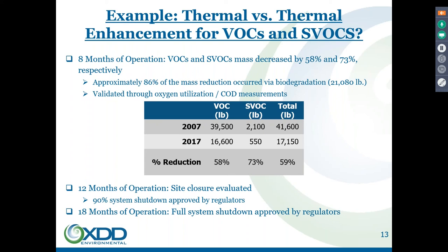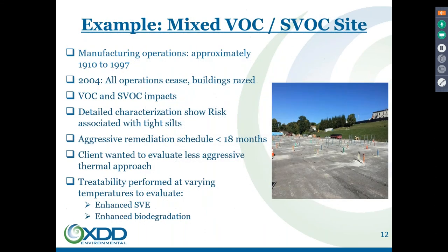The treatability study looked at what could be done at a lower temperature than 100°C. The cost of full thermal is really about boiling the water — the energy required over that area. What if we raise the temperature to a lower level and look at the changes in removal rates through soil vapor extraction enhanced by the thermal process? As you know, you get a significant exponential increase in vapor pressure with increases in temperature. Biologically, a 10-degree rise roughly doubles the biological degradation rate.